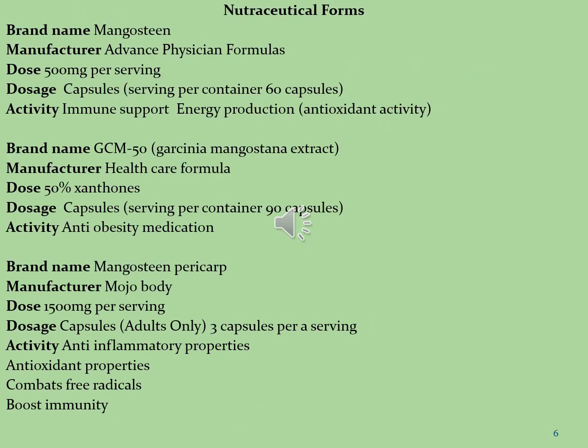Some important pharmaceutical brands contain phytoconstituents that fall in the category of xanthones. The first brand is Mangostin, manufactured by Advanced Physician Formulas, dose 500 mg per day, formulated in capsule dosage form serving 60 capsules per container. This brand is used as an immune system enhancer, for energy protection and antioxidant activity.